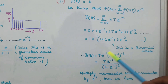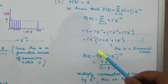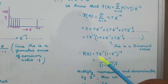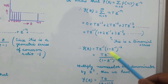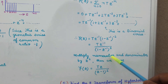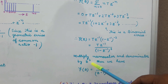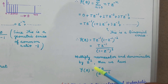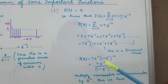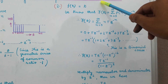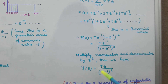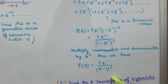So we can write this as F(Z) = T(Z^(-1)) into (1 - Z^(-1)) to the power minus 2, which can be written as T(Z^(-1)) divided by (1 - Z^(-1)) squared. Multiplying both the numerator and denominator by Z squared, we get F(Z) = TZ / (Z - 1)^2. So the Z transform of the ramp function f(t) = t is F(Z) = TZ / (Z - 1)^2.